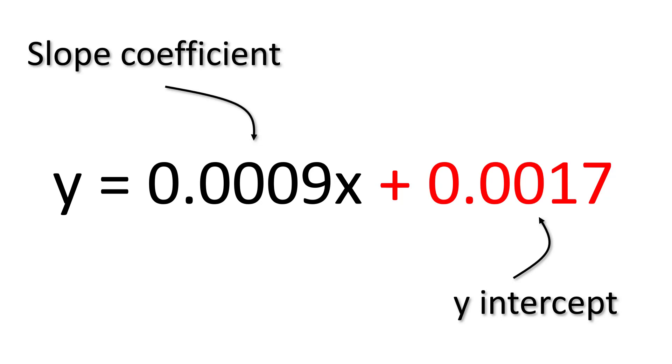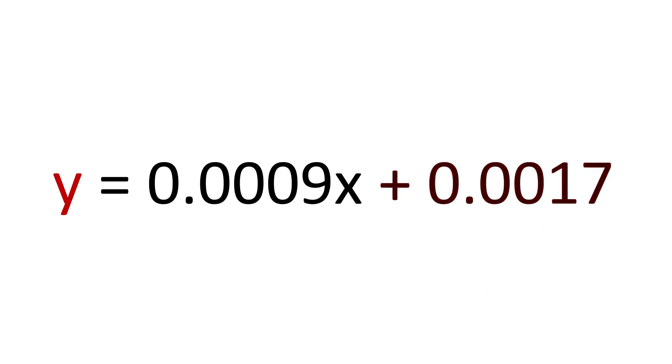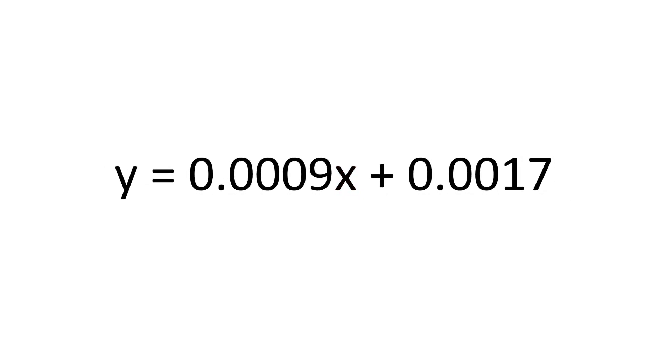Taken together I can use my equation to work out the value of y, which is the absorbance values. But what if you want to use the equation to work out the value of x instead, in my case the protein concentration. Well to do this you need to do some basic math to rearrange the equation and it's actually really simple.